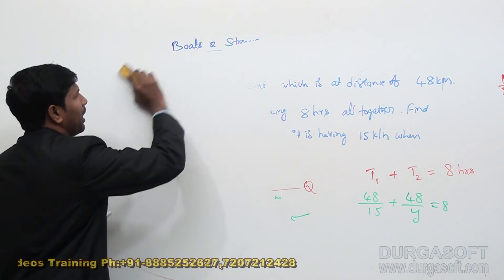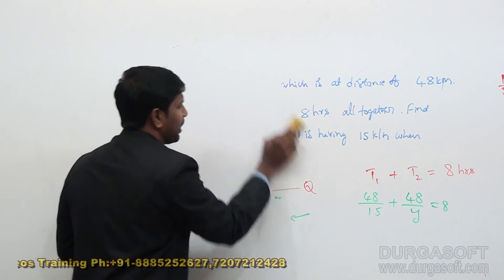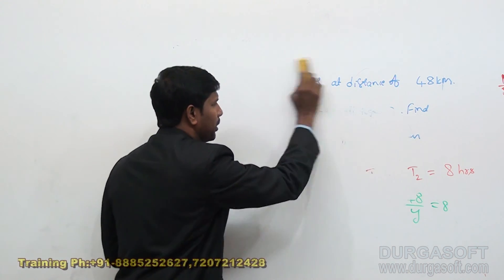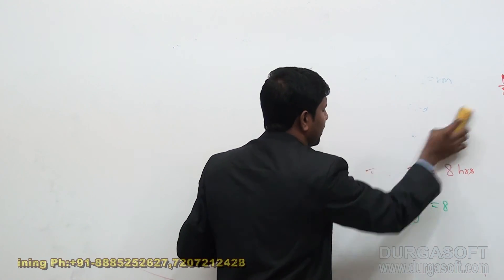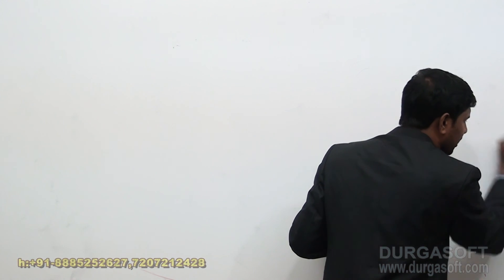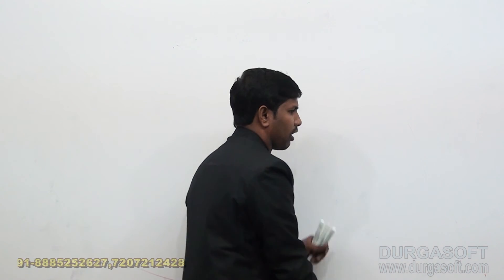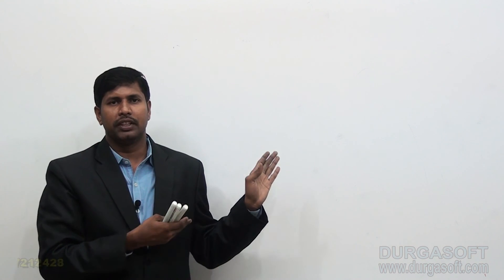Whenever we have downstream speed, upstream speed, current rate, or speed in still water, we can understand the meaning of each and solve accordingly. The important thing is to understand the meaning of the different speeds — once you do, you can substitute and get the required values. That is all about boats and streams. Thank you.